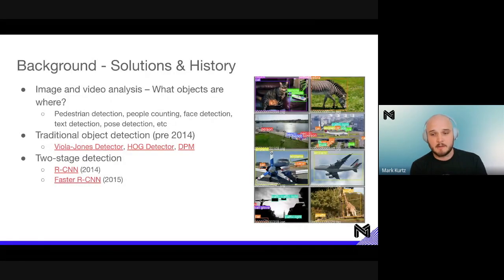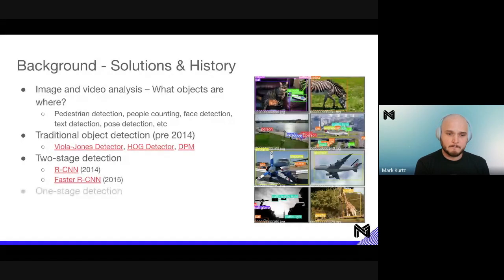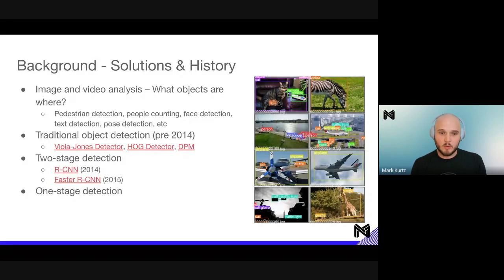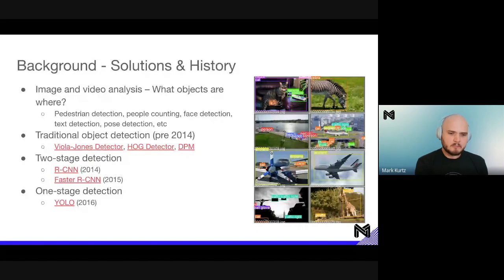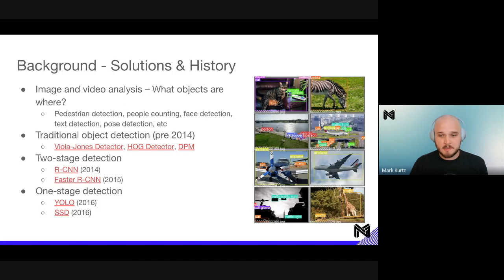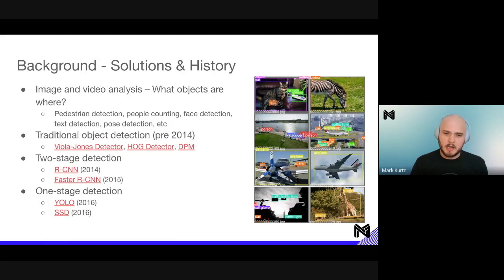RCNN and Faster RCNN were two-stage detectors that generally run slower but are very accurate. After that, one-stage detection came in with an end-to-end flow — both object proposals and classification through one network. The first to really do this was YOLO, and then SSD quickly followed. This enabled much faster performance for object detection tasks in terms of frame rates and throughput. SSD was a little more accurate as it could do offset and scaling for bounding boxes.